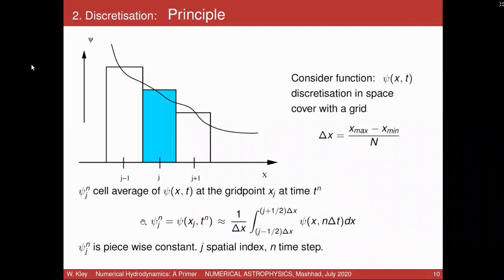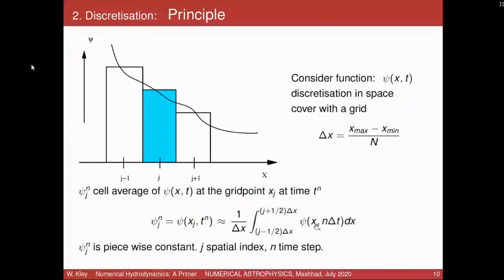In this example, yes, the function psi_j^n is piecewise constant. But on the right-hand side, that function does not need to be piecewise constant. If we take chi to be constant between j−½ and j+½, then we can take it out. But as I said, the function inside the integral does not need to be piecewise constant; however, the variables on the left side, psi_j, remain piecewise constant. I will come to this a little bit later; there will be an example where you can see how it varies.